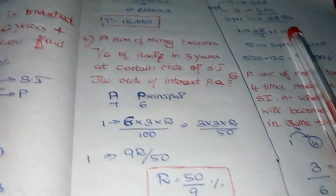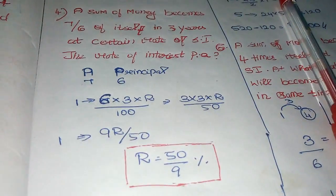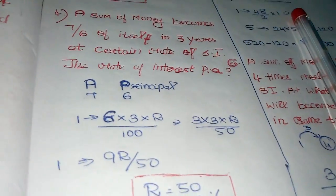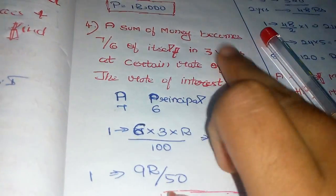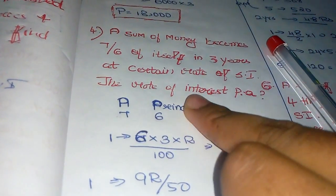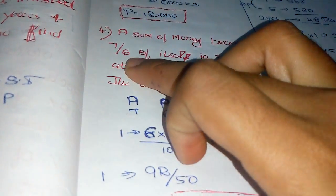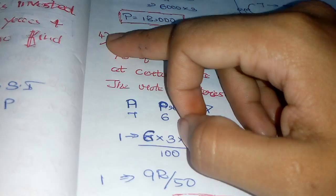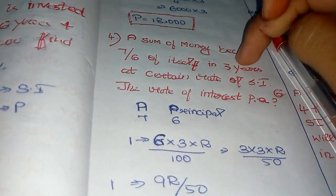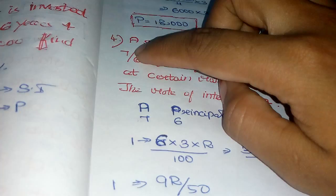Next sum: Sum of money becomes 7/6 of itself in 3 years at certain rate of simple interest. Find the rate of interest per annum. Here amount is on one side, principle is on another. Amount minus principle gives simple interest.